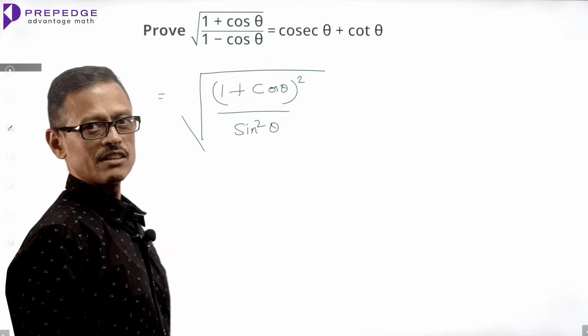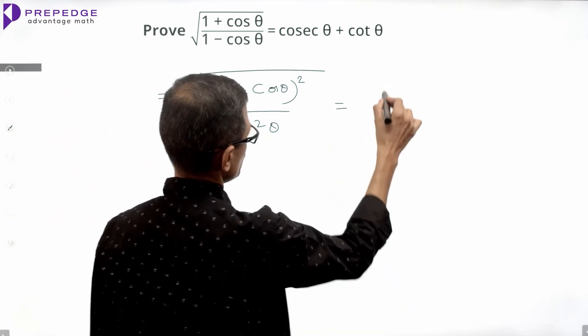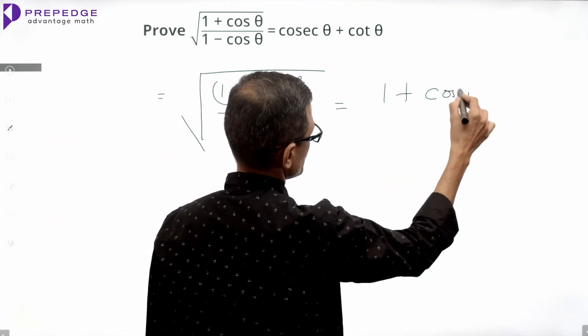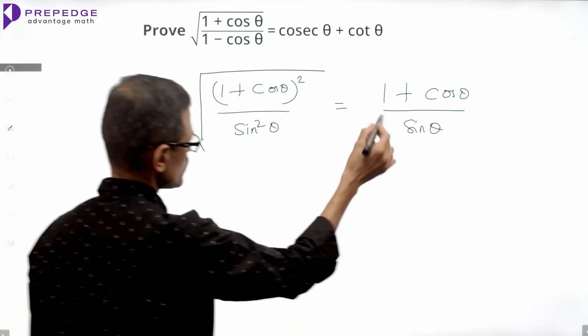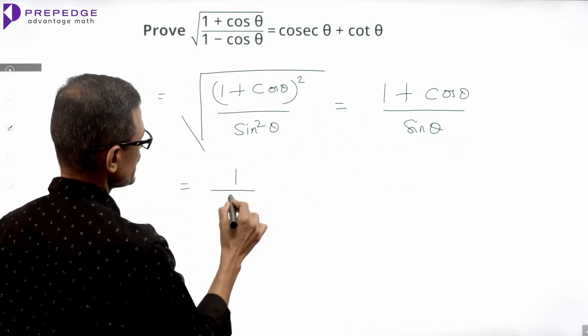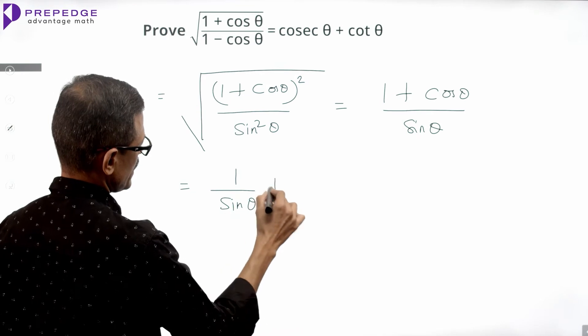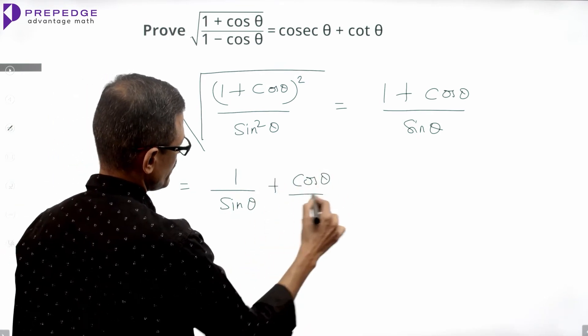The entire term is under square root. So what we will get is 1 plus cos theta divided by sin square theta. We will split it and write it. This is going to be 1 by sin square theta plus cos square theta divided by sin square theta.